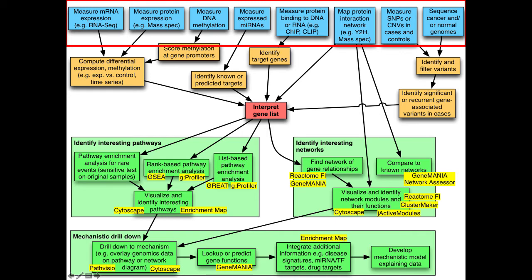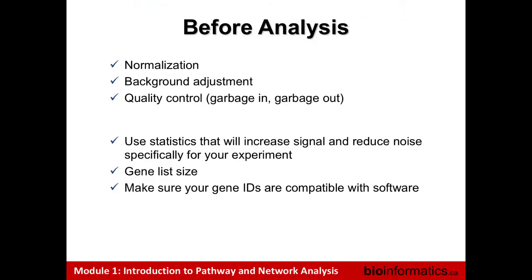Lots of different types of genomics data can generate gene lists. Before analysis, you have to do all the normalization and quality control — if it's not working, your pathway analysis won't work: garbage in, garbage out. You have to use statistics that will increase your signal versus noise. Think about gene list size: if your analysis results in three genes, that won't give much power for pathway analysis; if you get all genes in the genome, you can't say anything specific. The sweet spot is typically tens to hundreds or thousands of genes.